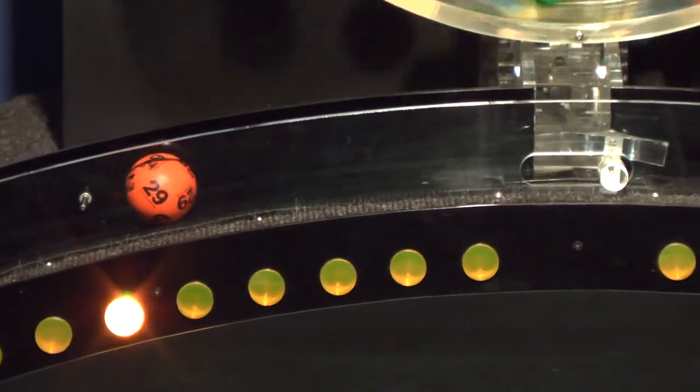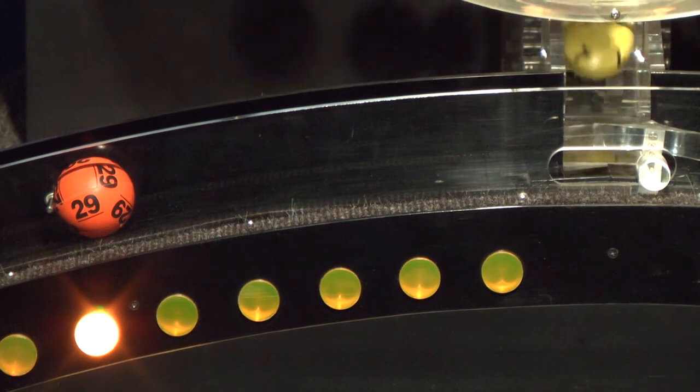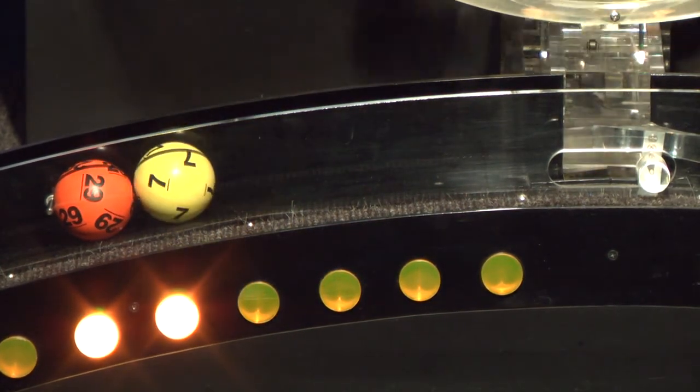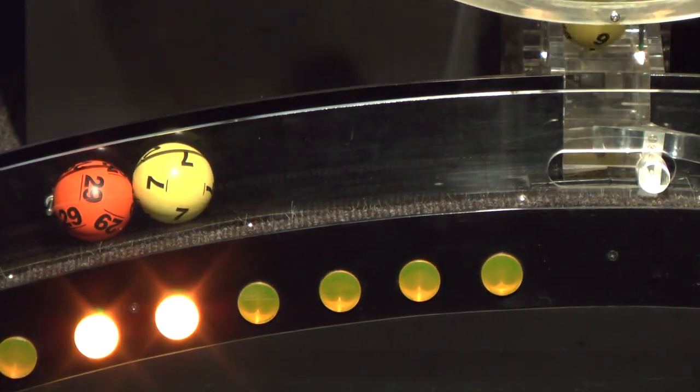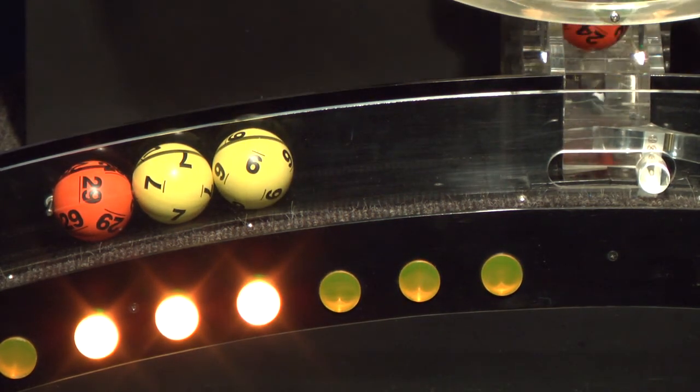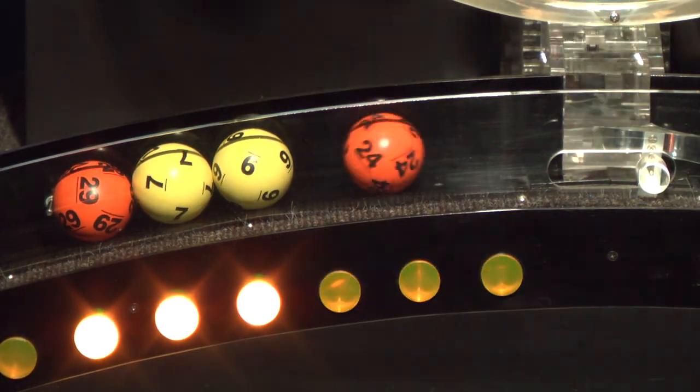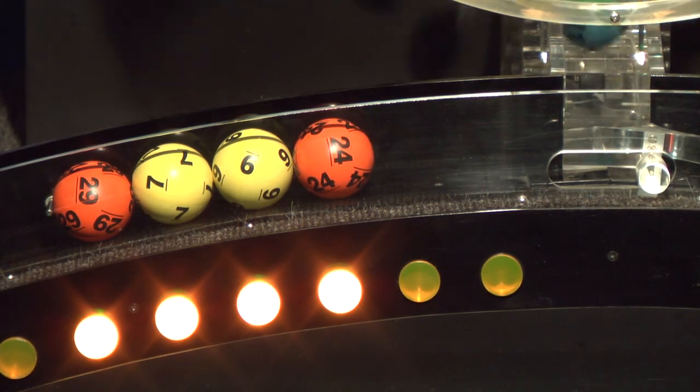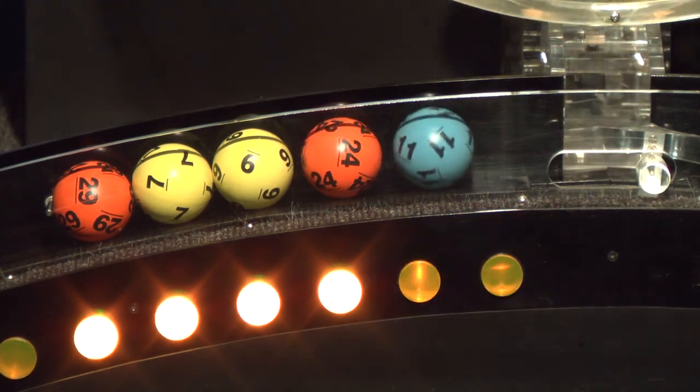Our first number up is number 29. After that we have number 7. And here comes number 9. Up next is 24. And the final ball in this sequence is number 11.